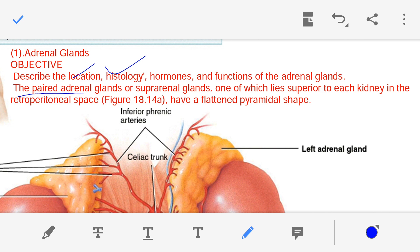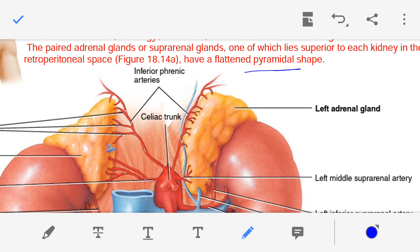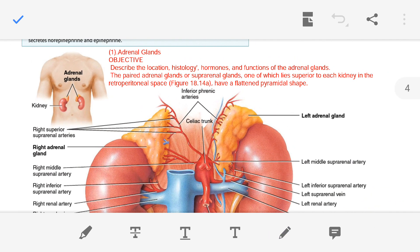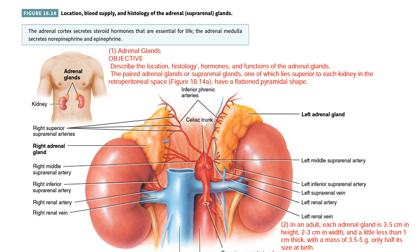Adrenal glands are paired, meaning there are two of them. They are also known as suprarenal glands. Both adrenal glands lie superior to each kidney — on top of the kidney — and they are present in the abdominal cavity in the retroperitoneal space. The adrenal glands are flat and pyramidal in shape, as you can see shown in yellow in this figure illustrating the location, blood supply, and histology of the adrenal glands.